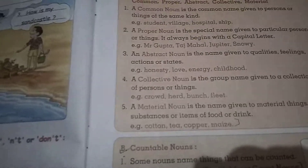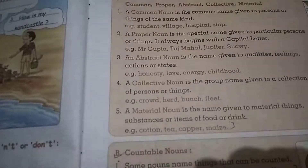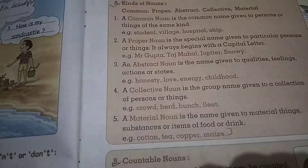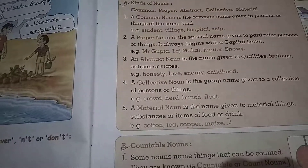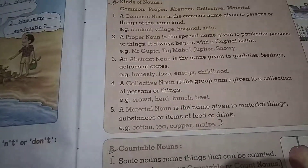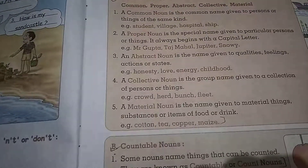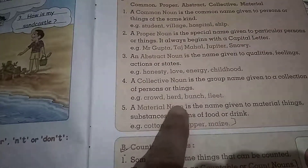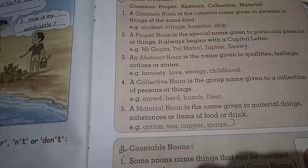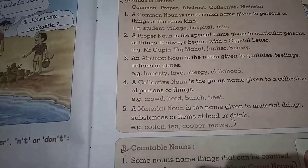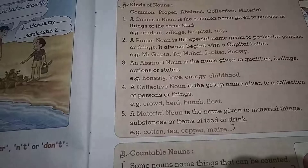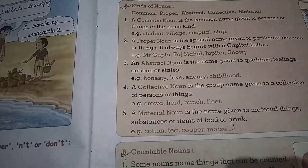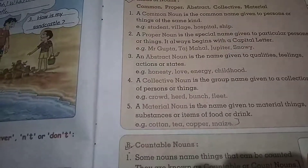An Abstract Noun refers to the quality of a person — its quality, its feelings, its actions expressed — it is called Abstract Noun. Collective Noun is a group name given to a collection of persons or things — like 'crowd' or 'herd of elephants'. Material Noun is the material thing, substance, or items of food and drink — like cotton, tea, copper — the substance which we use or drink.